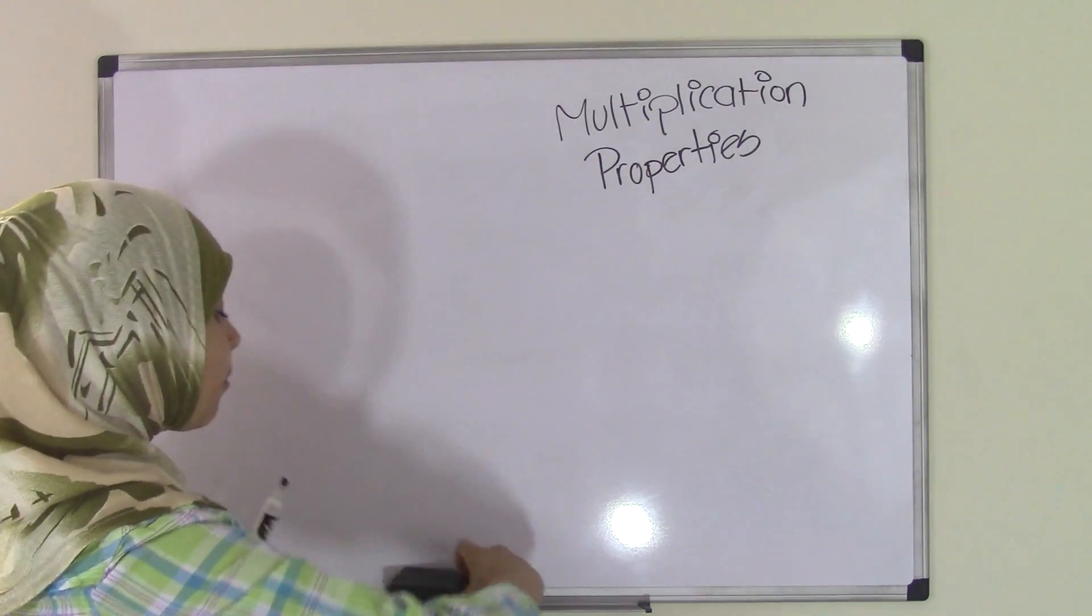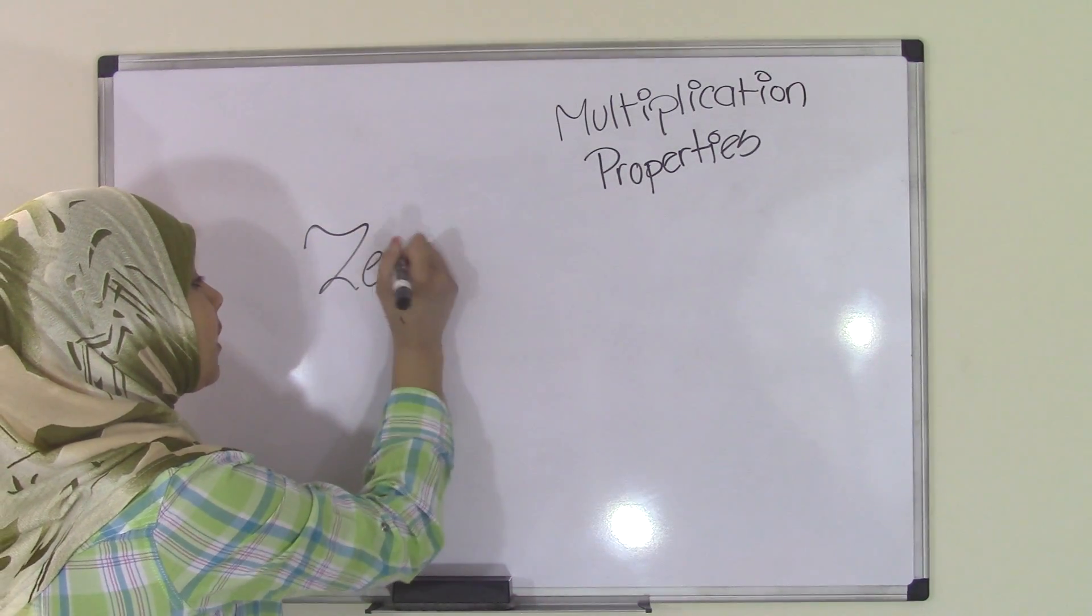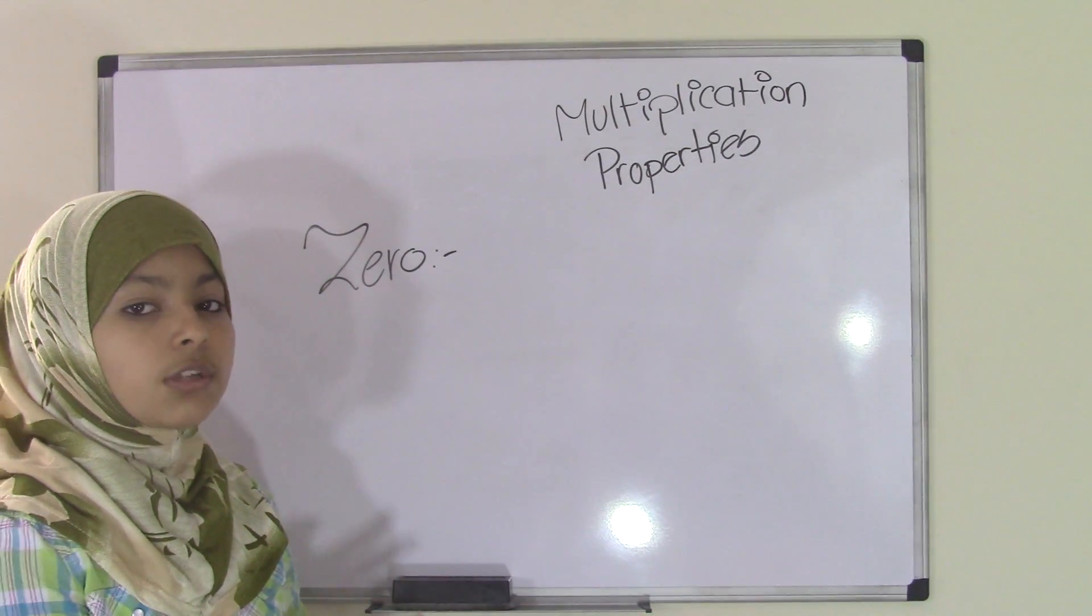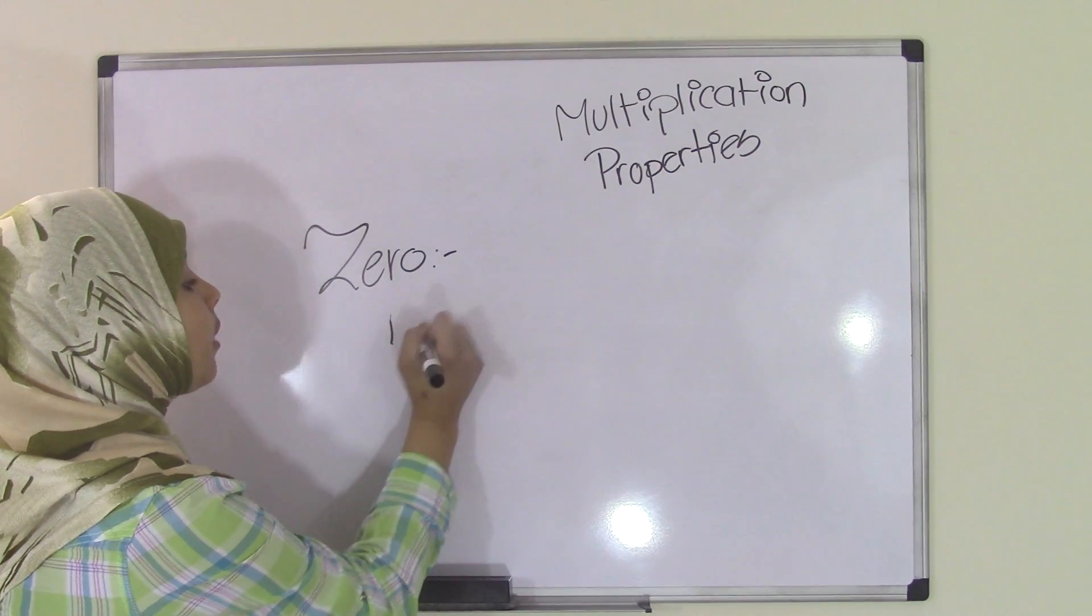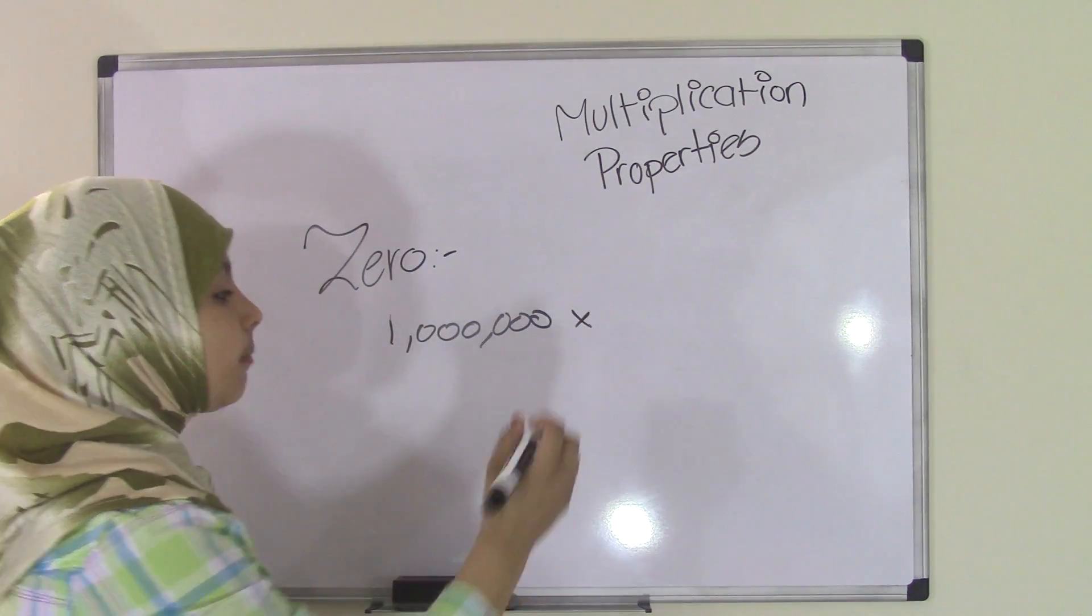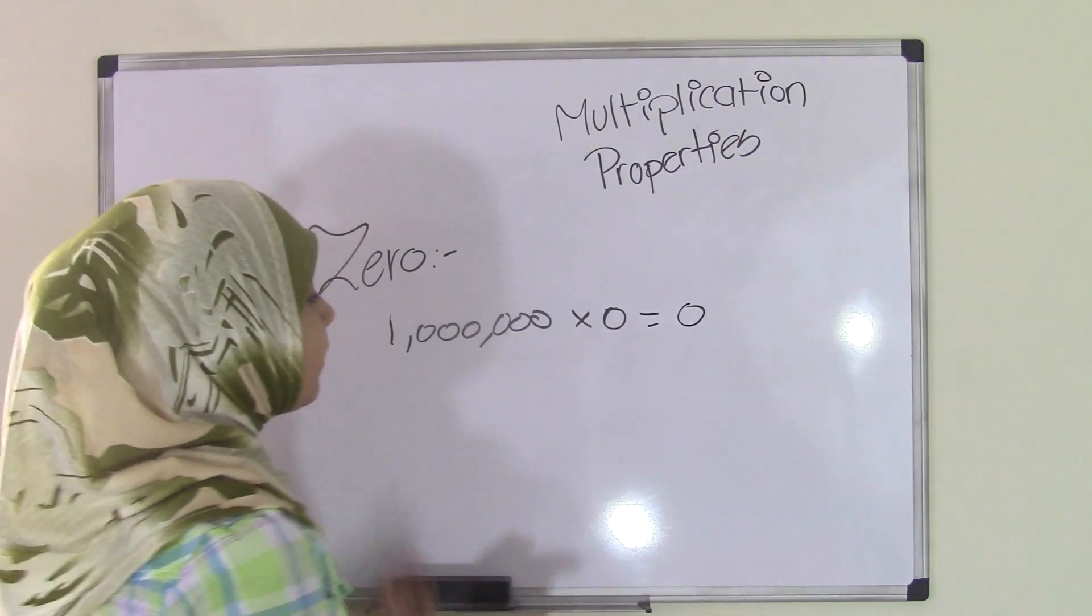And the easiest, the most easiest is the last property, which is the zero property of multiplication. Now the zero property: anything you multiply by zero, the answer is always going to be zero. So even if you still have 1 million, and that's such a big number, and you're multiplying it by zero, guess what? The answer is going to be zero.